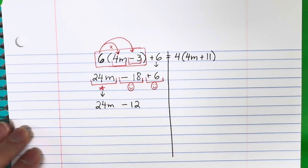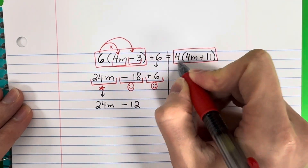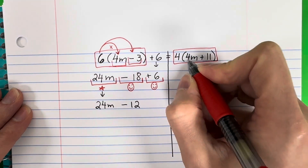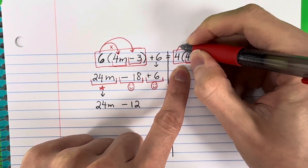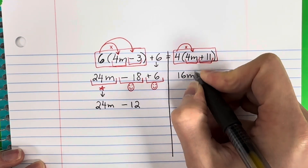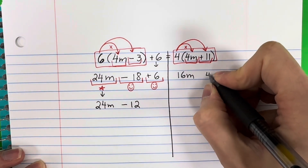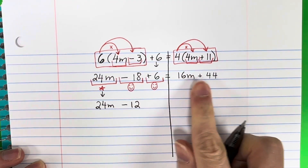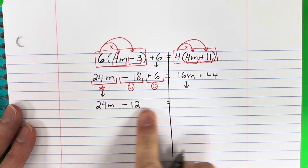Moving to the right side — there are parentheses, so do those first. The number in front of the parentheses is 4, and inside are two terms: 4m and positive 11. Parentheses means multiply. 4 times 4 is 16 — copy the m. Then 4 times 11 is 44, positive. So the right side is 16m plus 44.